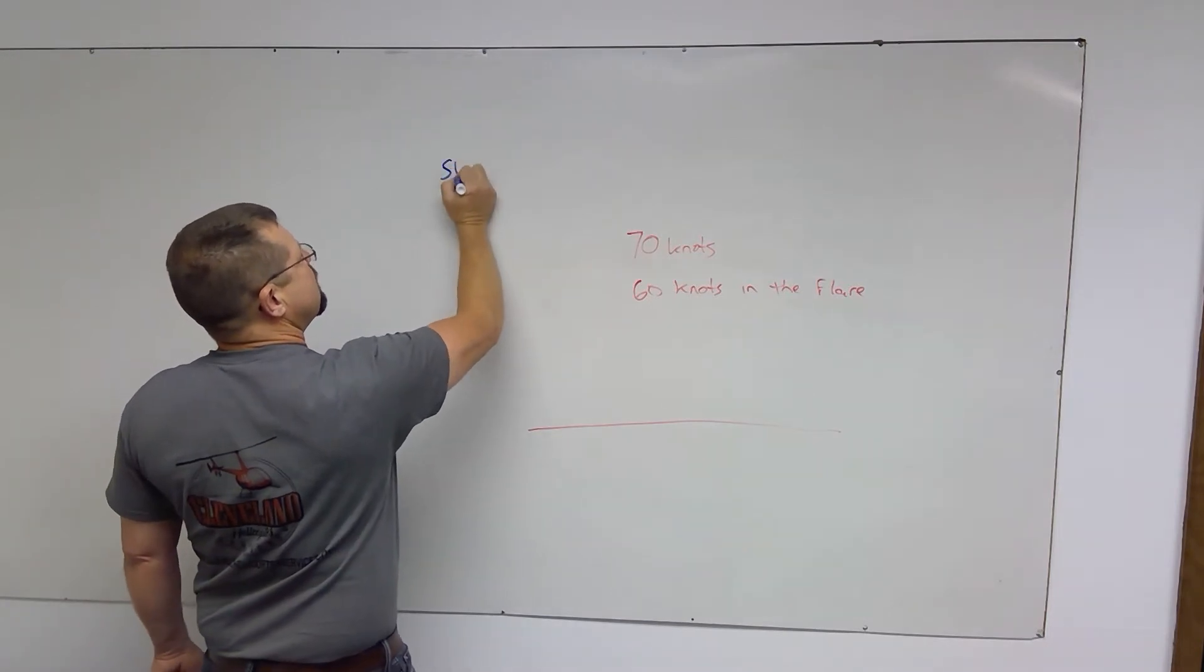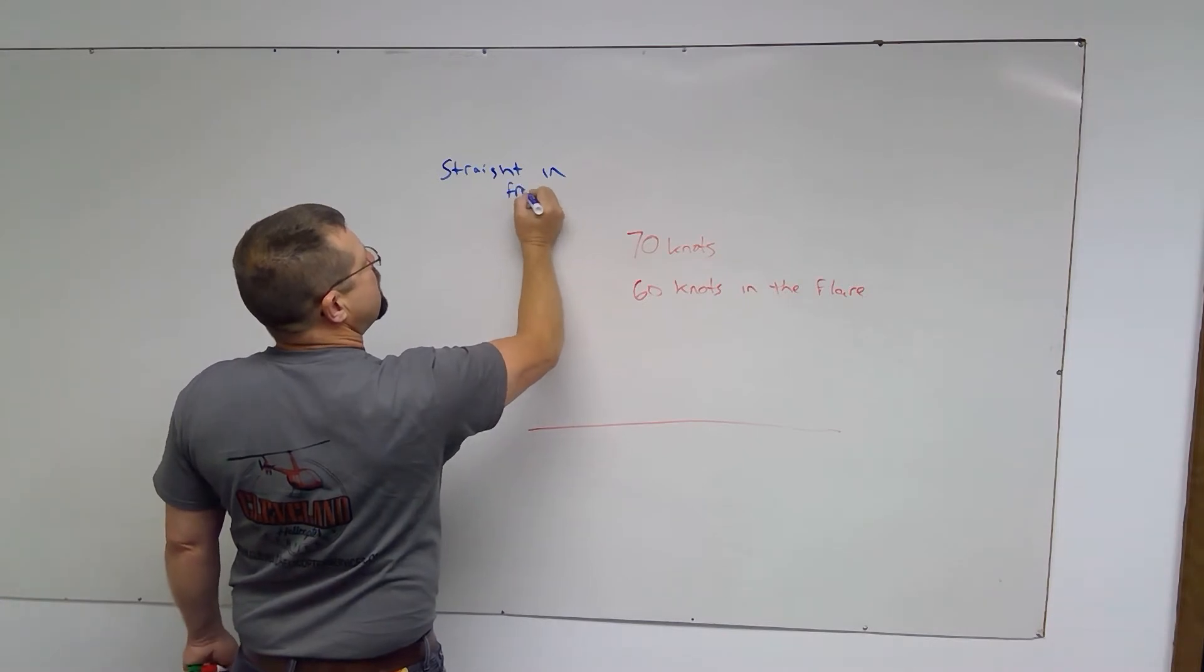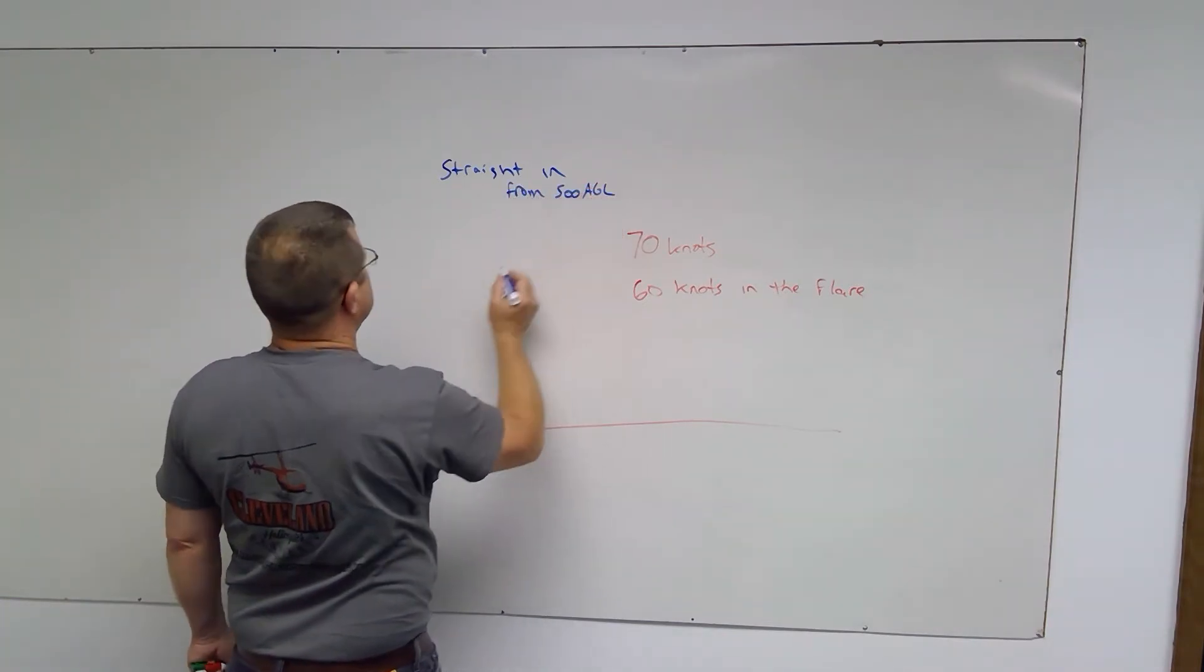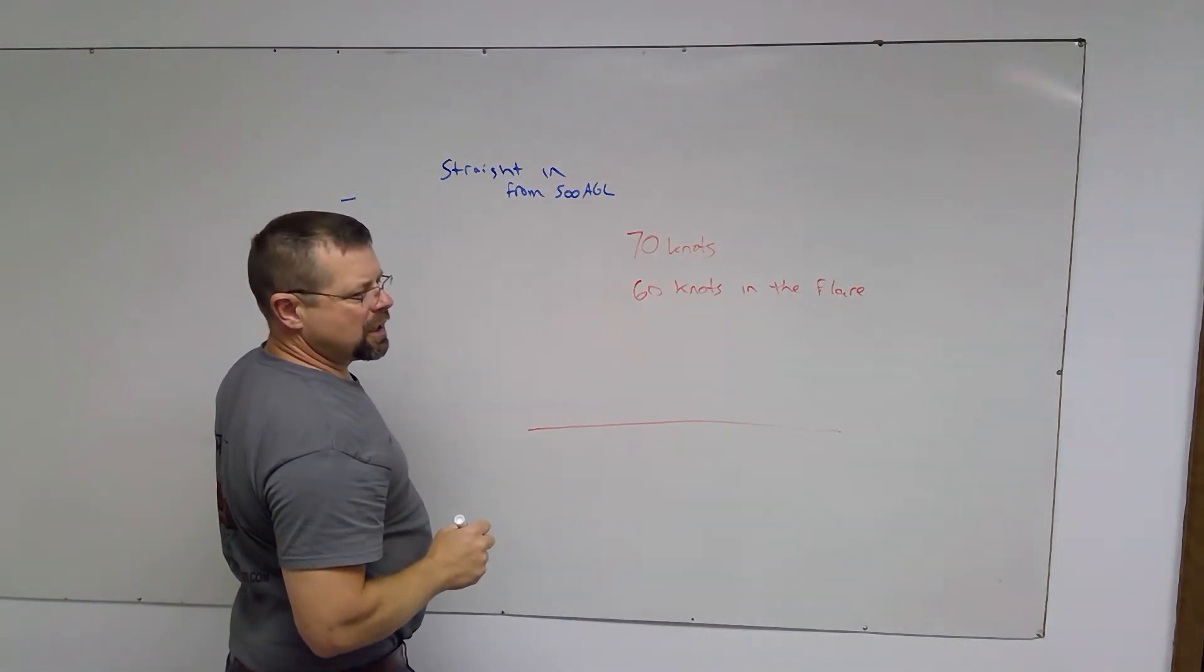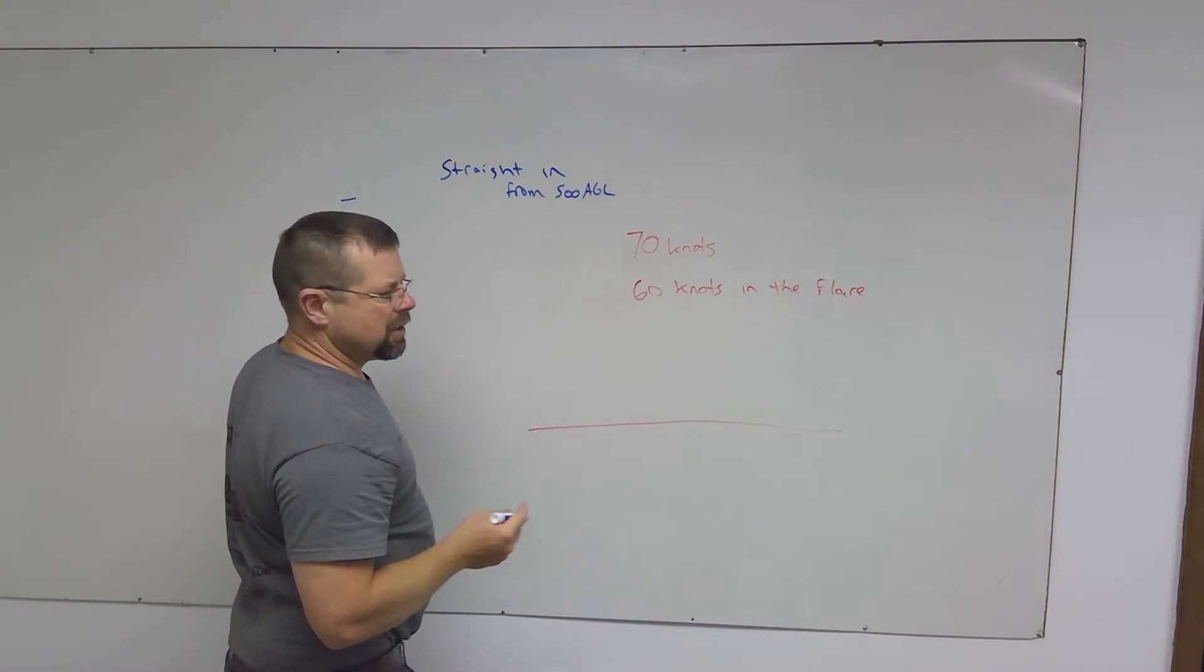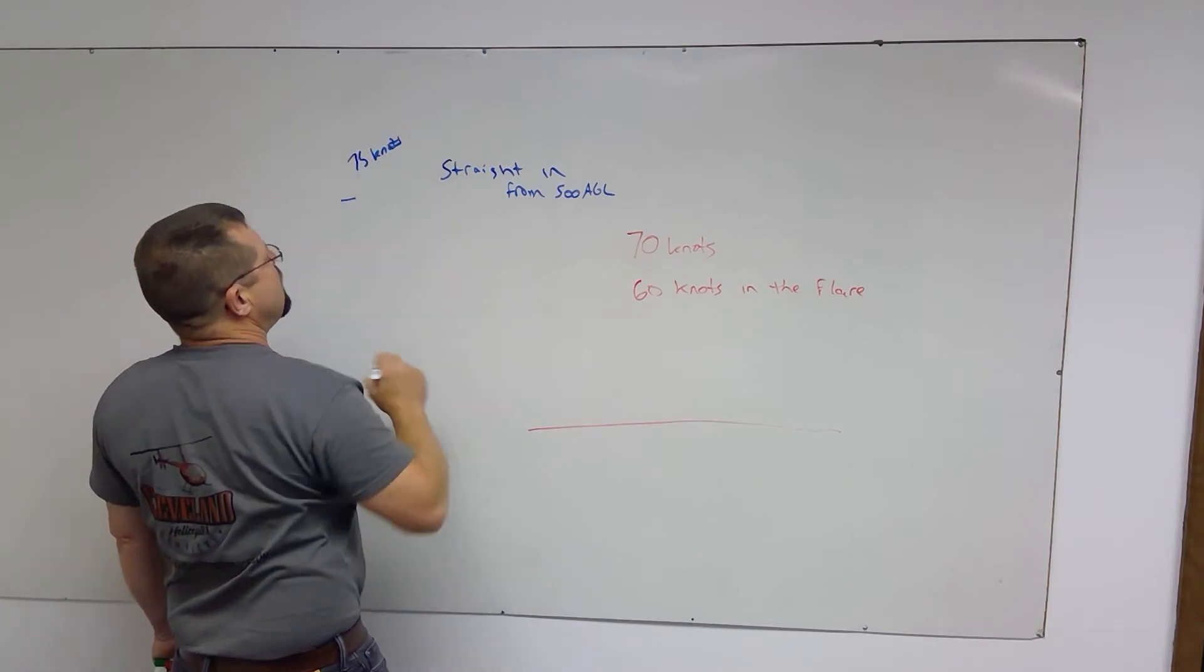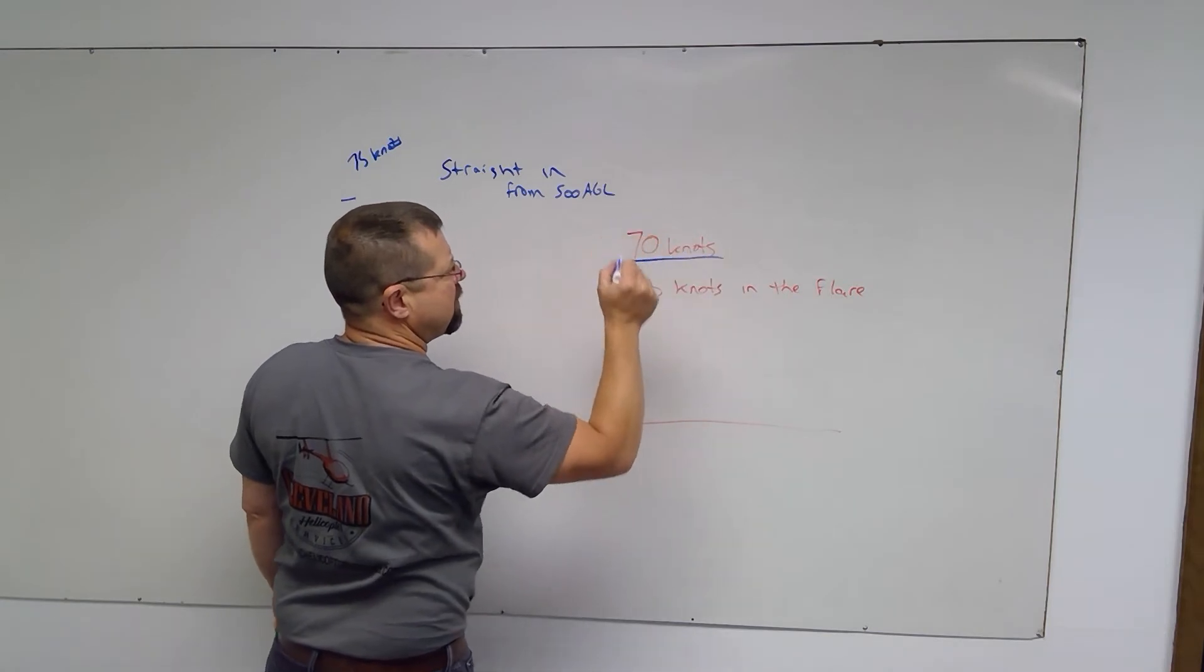When we practice these, a straight in will be from 500 AGL. You're going to enter with lower collective, right pedal, some aft cyclic, entering at 75 knots. After you make these inputs, you should be right at 70 knots.